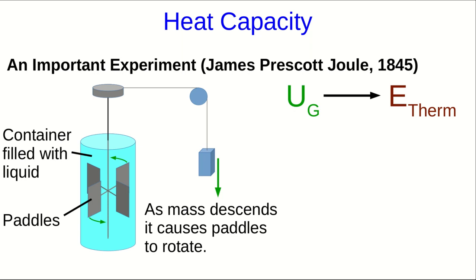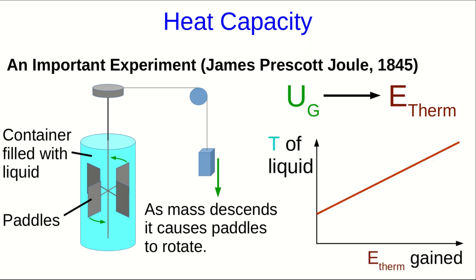And so, this is a device that converts gravitational potential energy into thermal energy. Now, that's our modern understanding of it. In fact, what Joule was doing here was showing that work can be used to increase the temperature of an object. And this meant temperature had to be a measure of some sort of energy, what we now call thermal energy. And what he observed was that there was a linear relationship between the energy input to the liquid and the temperature of the liquid.